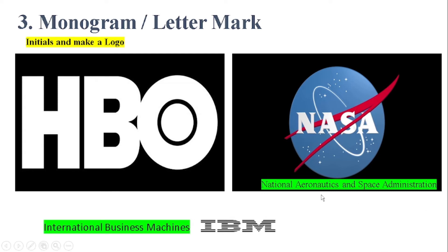If you ask people, do you know the National Aeronautics and Space Administration, they may not know much about it. But if you ask them do you know NASA, they will definitely know, because it became more famous and they are familiar with the logo. The same goes for IBM, which stands for International Business Machines. This type of logo is called the lettermark logo. They take the initial letters and prepare a logo from them.